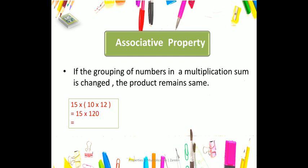For example, we have three numbers: 15, 10, and 12. When we multiply them by grouping first 10 and 12, after multiplying 10 and 12 we get 120. And when we multiply the third number, which is 15, we get 1800. If we regroup and multiply 15 and 10 first, we get 150, and then multiplying by the third number, 12, we get 1800 also.